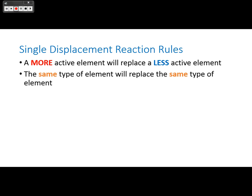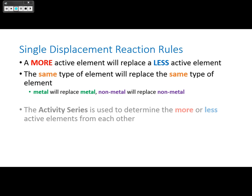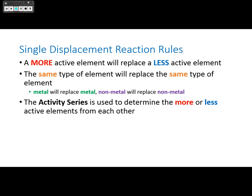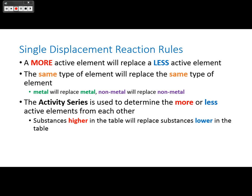The same type of element always replaces the same type — a metal will replace a metal, a non-metal will replace a non-metal; they cannot cross over. The activity series is used to determine which elements are more or less active relative to each other.